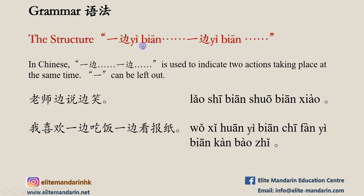The structure 一边...一边 indicates two actions taking place at the same time. 一 can be omitted. Example: 老师边说边笑。 笑 means 'laugh.' The sentence means: 'The teacher laughed while she spoke.'